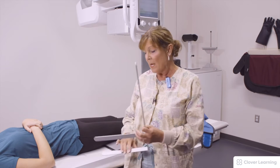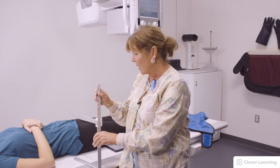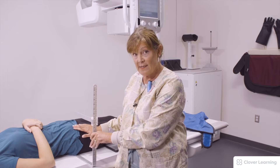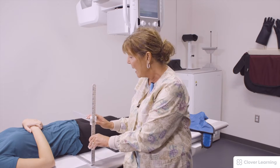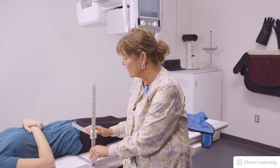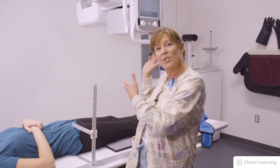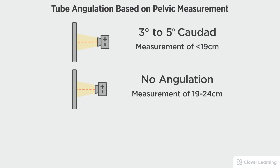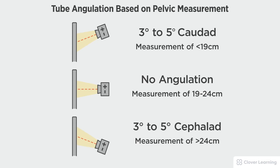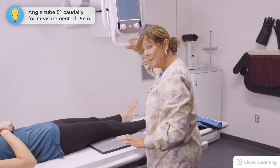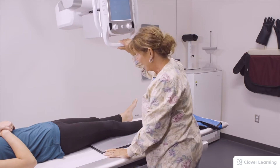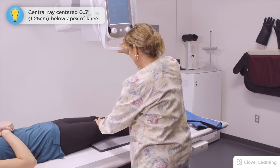The textbook also recommends measuring the ASIS — the anterior superior iliac spine — in centimeters. This number gives you the degree of central ray angulation. She measures 15 centimeters, so for the AP I have a five degree caudal angle. I'm going to center a half inch below the apex of the knee.